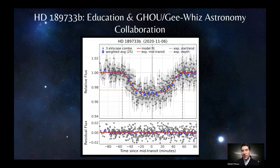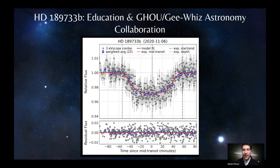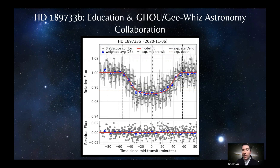This is an example of an exoplanet transit light curve that was actually inspired by modelers who created a gee-whiz astronomy group during the COVID-19 pandemic. This included high school students from around the world who met on Zoom. They wanted to get a transit of the exoplanet HD 189733b. So we had the Unistellar Network observe it for them, and this is what we got. These students were able to get that transit light curve and learn about exoplanet science through the Unistellar Network.